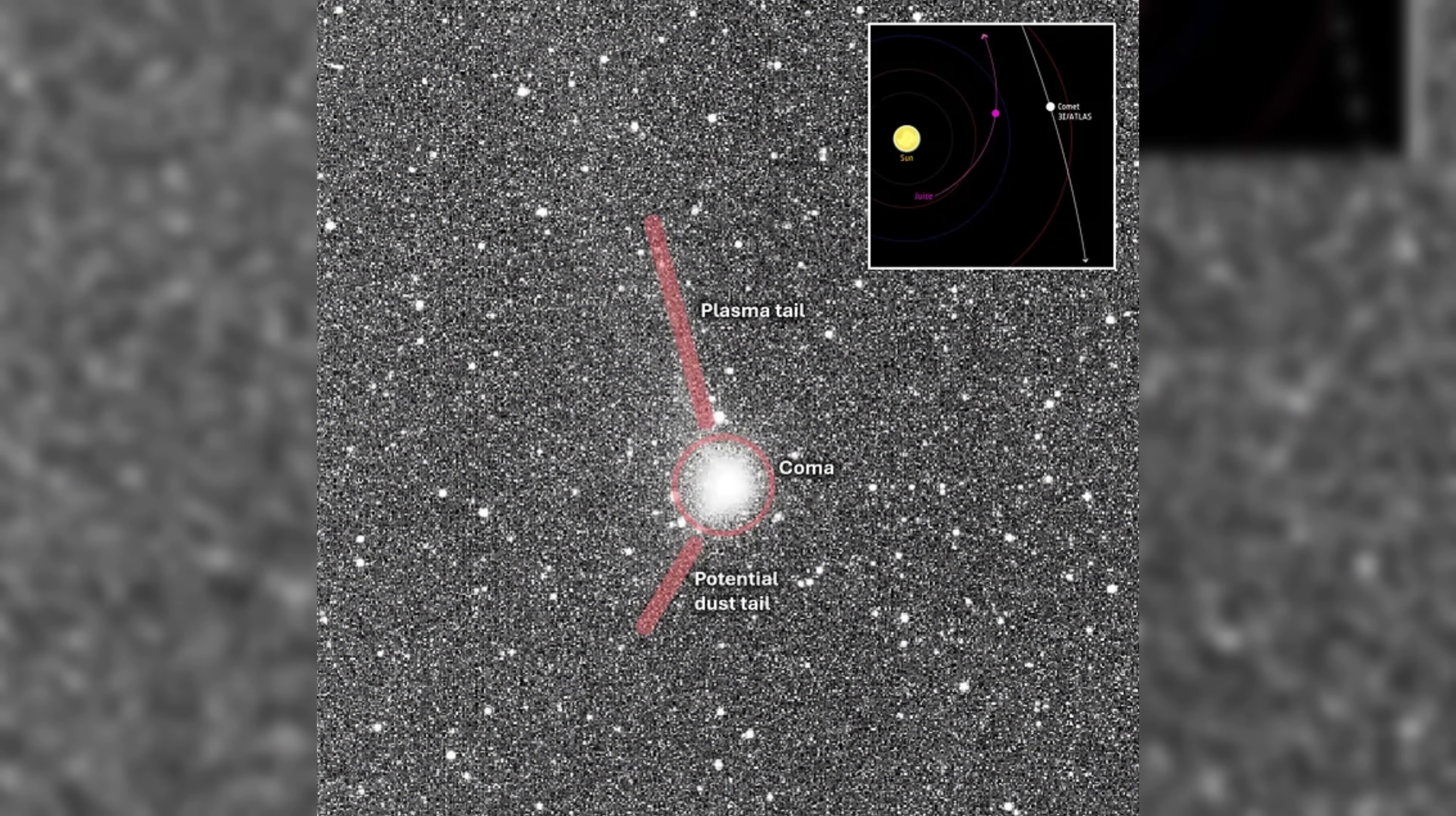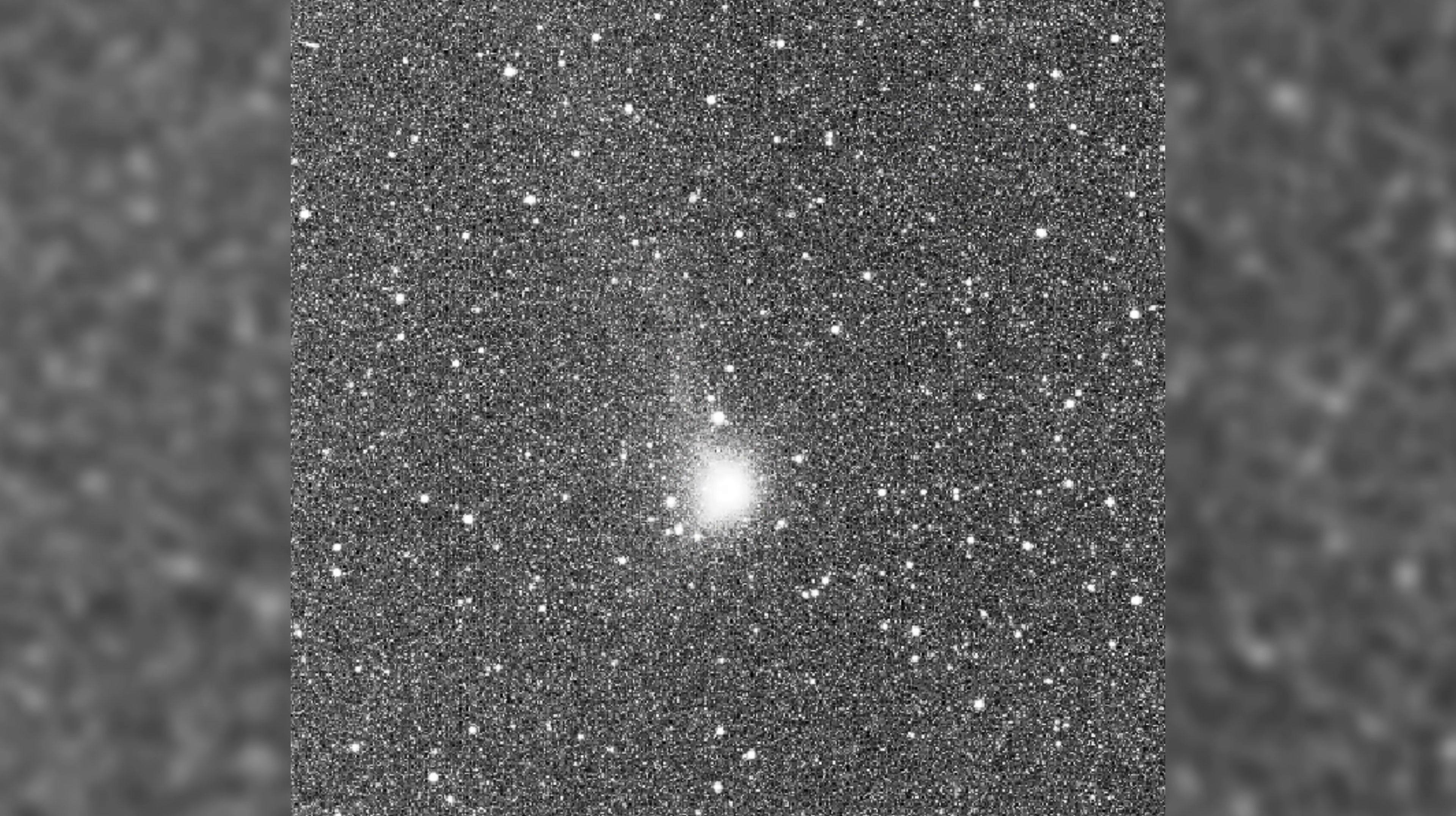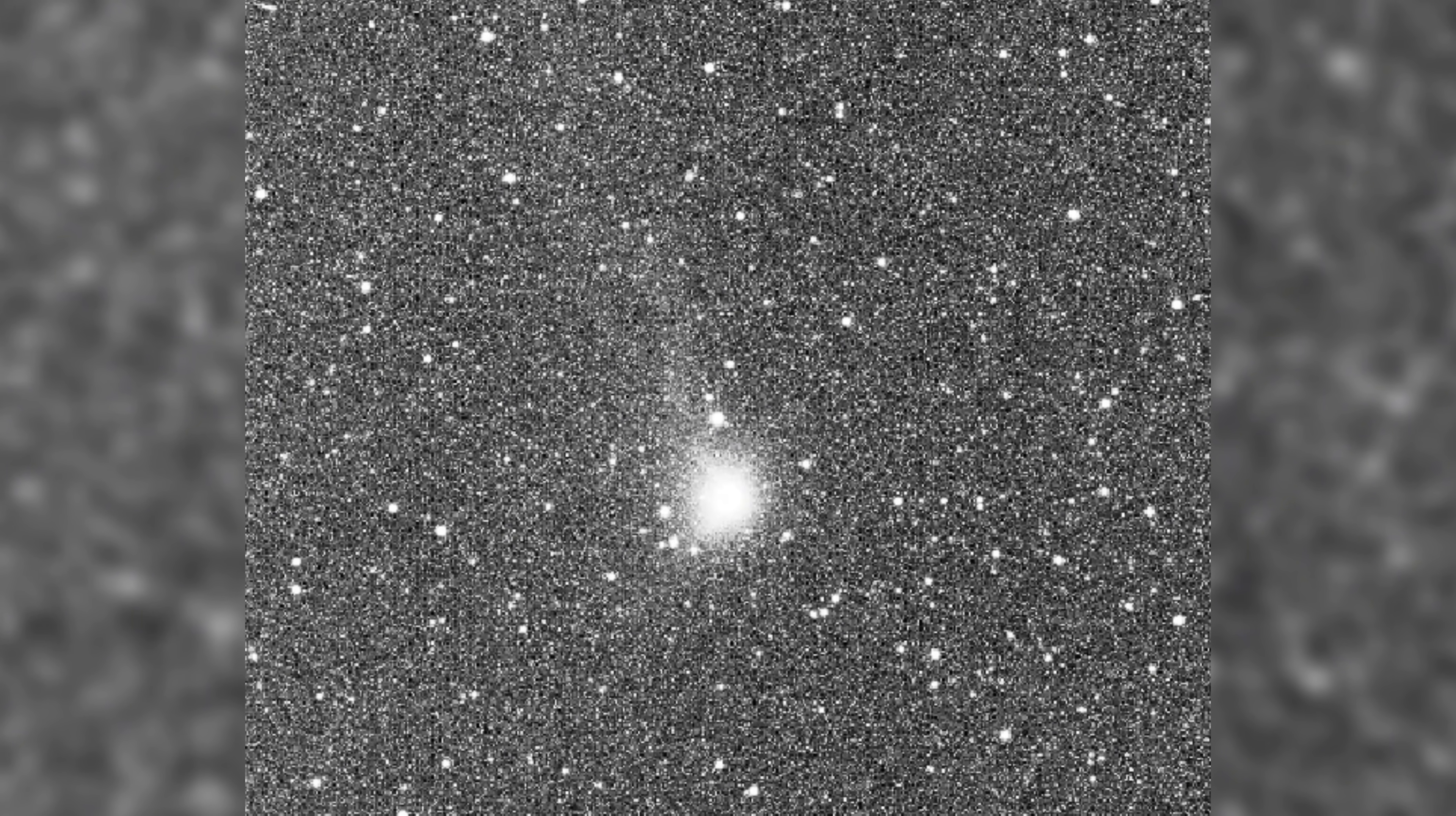Even with its lower-resolution antenna throttling data flow, the frames confirmed the object's intensity and structural complexity. JUICE's spectrometers and high-resolution JANUS camera also recorded data that will not reach Earth until February, raising anticipation for what chemical and thermal signatures may reveal.